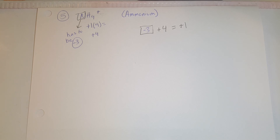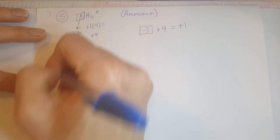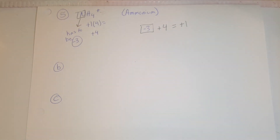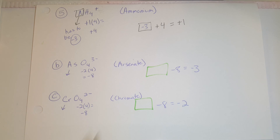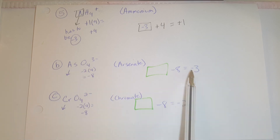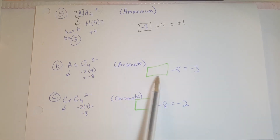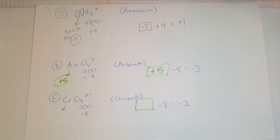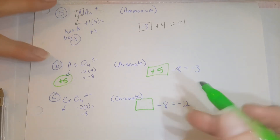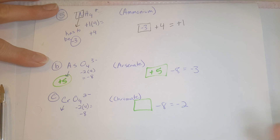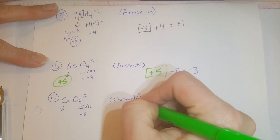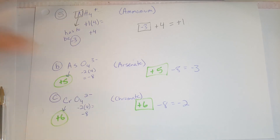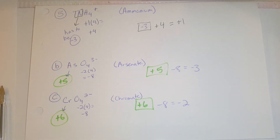Pause and try parts B and C for number five. For the arsenate ion, the total charge is negative three and the oxygens make negative eight, which means arsenic needs to be a positive five oxidation number. For chromium, we need it to total negative two instead of negative three, so we need a bigger positive number — chromium has to be a positive six. If you have questions, please sign up for a one-on-one session. Thank you very much.